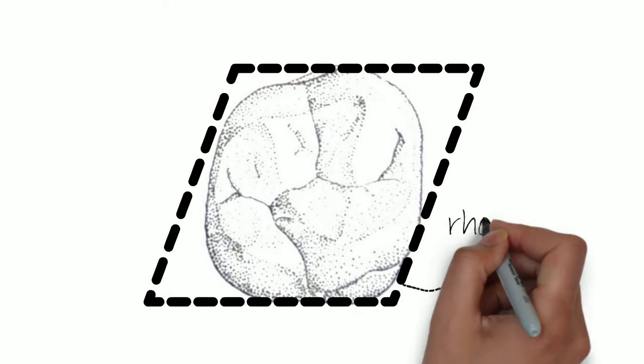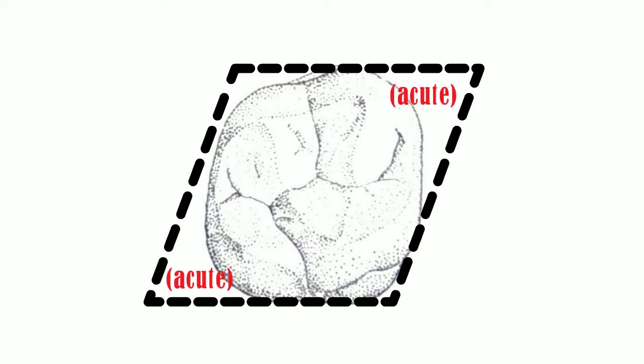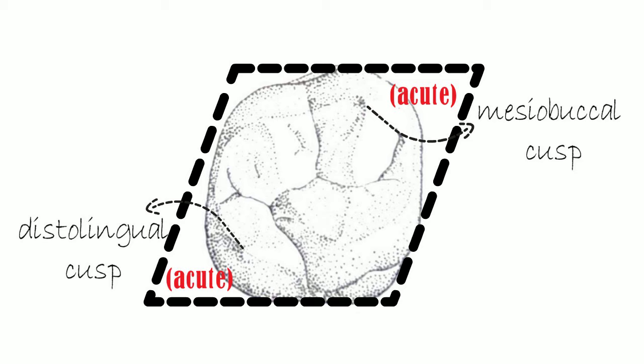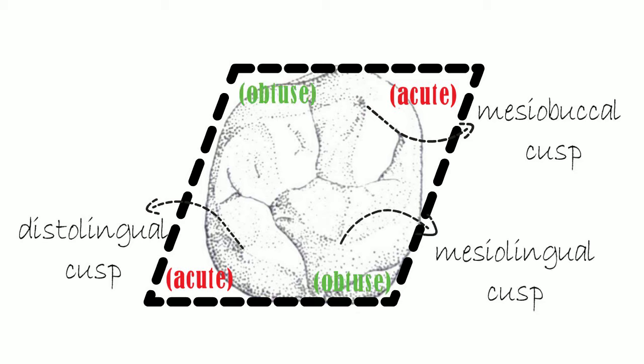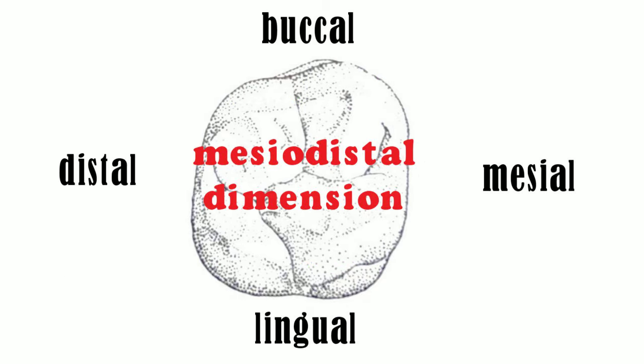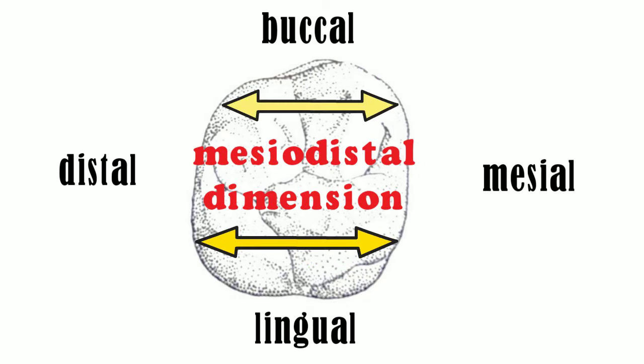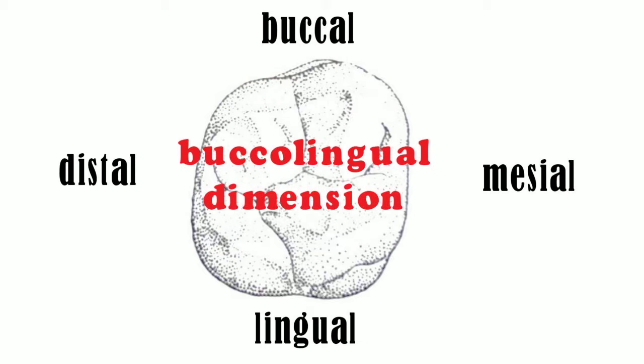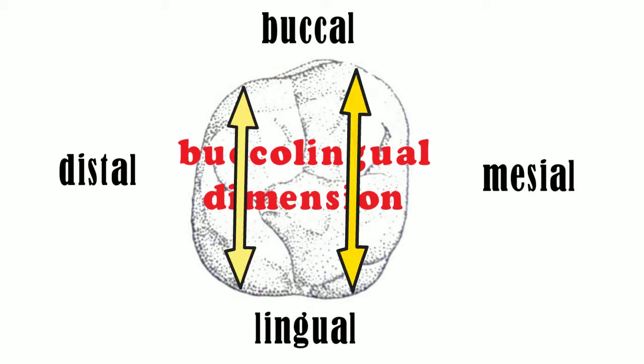From the occlusal aspect, the outline form of the crown is rhomboidal in shape. The acute angles of the rhomboid are at the mesobuccal cusp and distolingual cusp, whereas the obtuse angles are at the mesolingual cusp and distobuccal cusp. The mesodistal dimension of the crown is more in the lingual half than the buccal half, and the buccolingual dimension is more in the mesial half than the distal half.